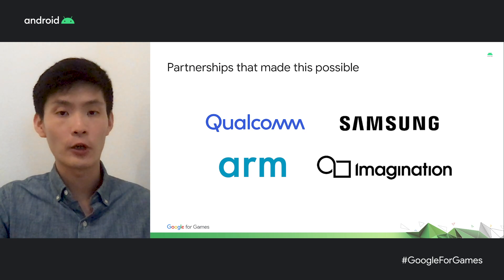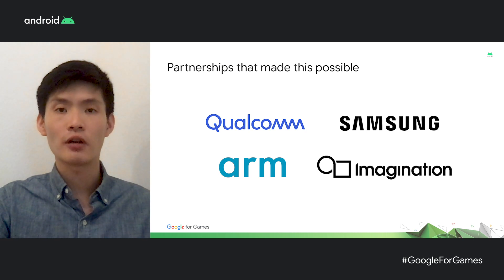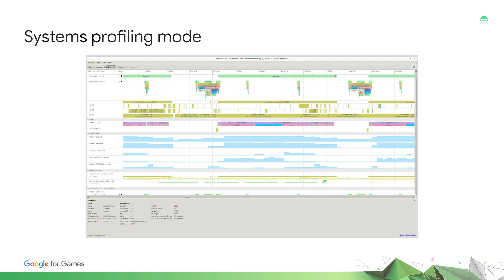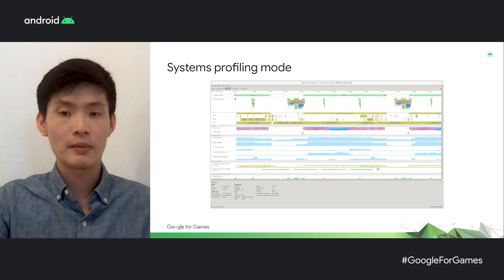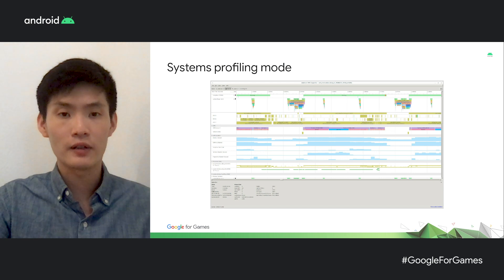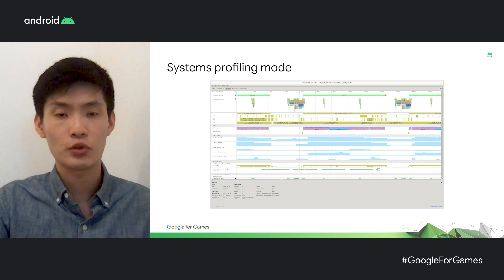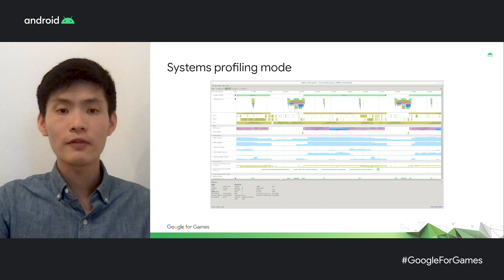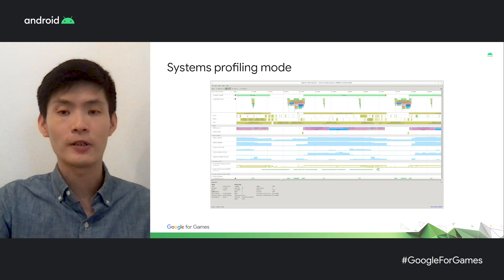We'd like to thank them for their ongoing support and collaboration on this project. Let's dive quickly into the features of Android GPU Inspector. This tool can take a trace of events from your entire system — that includes system activities and hardware counters. It plots them on a timeline similar to our Systrace tool. However, the key difference from Systrace is that Android GPU Inspector provides GPU hardware counters and activity information.